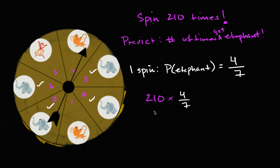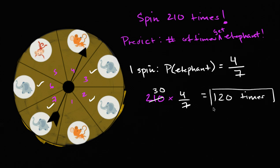Let's think about what this is: 210 times four-sevenths — 210 divided by seven is 30, 30 times four is 120. So 120 times. My prediction — and maybe your prediction was this as well — is that if I spin it 210 times, then I'm going to get an elephant 120 times.